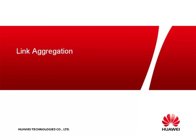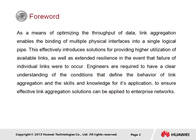This section looks at link aggregation that acts as a mechanism for better utilization of redundant links. As a means of optimizing the throughput of data, link aggregation enables the binding of multiple physical interfaces into a single logical pipe. This effectively introduces solutions for providing higher utilization of available links, as well as extended resilience in the event of failure of individual links. Engineers are required to have a clear understanding of the conditions that define the behavior of link aggregation and the skills for its application to ensure effective solutions can be applied to enterprise networks.